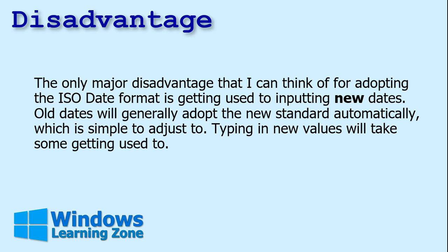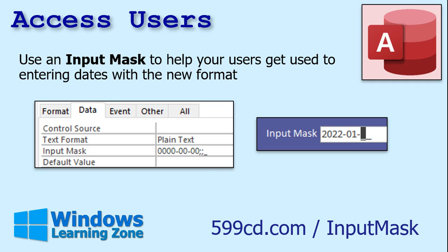Old dates will generally adopt the new standard automatically. Typing in new values is going to take some getting used to. If you're just typing common dates like month-day, you can still type in 4/5. But if you're doing stuff with years, you've got to remember to lead with the year — type in 22/4/5 at least. Practice and get used to it. If you want some enforcement and help getting used to the new date format, set up an input mask in your fields so users have to input the data in the correct format. I have a whole separate video on input masks — there's a link in the description.